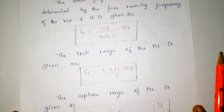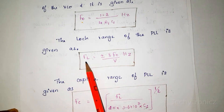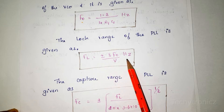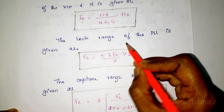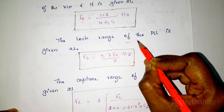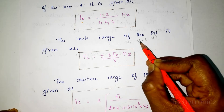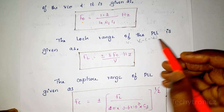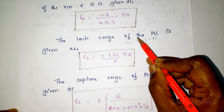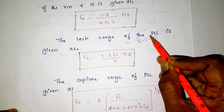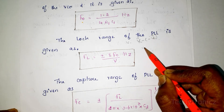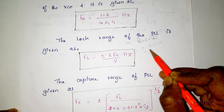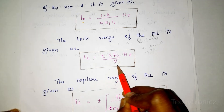The lock range of PLL is given as: FL = ±8F0 / V Hz. Here the voltage V equals V+ minus V−, that means VCC minus (−VCC). For example, if your power supply is +10 V and negative supply is −10 V, then V = 10 − (−10) = 20 V.